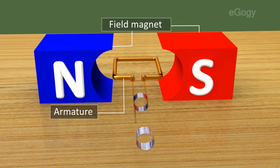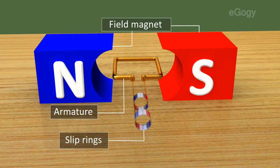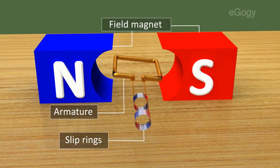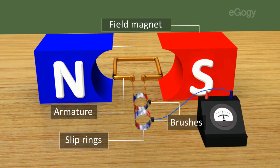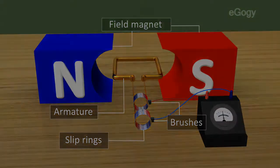The slip rings are circular rings fused to the ends of the coil. They rotate about the same axis as that of the armature. Brush is an arrangement that is always in contact with slip rings. Current flows to the external circuit through this.